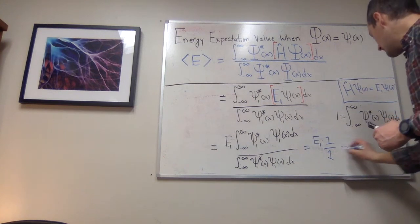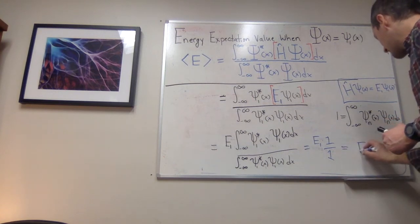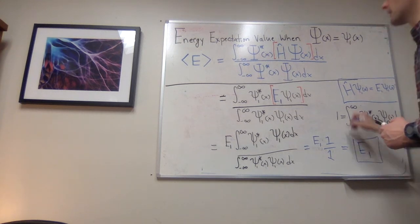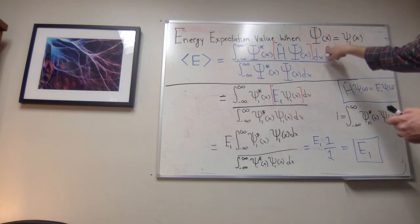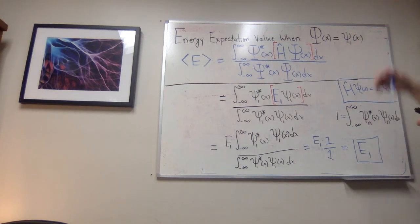So in the end, my energy expectation value is E sub 1. That's the result for the case when the wave function is equal to psi_1(x), the first energy eigenfunction.